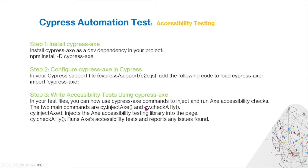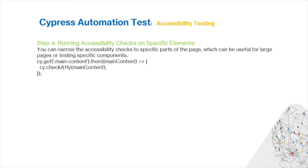cy.injectAXE injects the Cypress accessibility testing library into the page, while cy.checkA11Y runs the AXE accessibility test and reports any issues found. You can also run accessibility test checks on specific elements — you can narrow the accessibility checks to specific parts of the page, which is useful for large pages or testing specific components. For example, you get your main content and then call checkA11Y on that element.